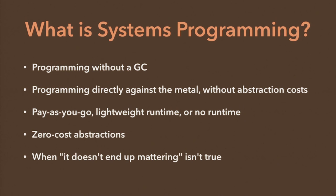A lot of times when you write in a dynamic language, people say that performance thing doesn't really end up mattering in practice. But I think everybody has experienced times where it did matter — where you wrote a bunch of code, and yes, 90% of your app had no performance cost, but then you had some area where performance actually mattered. A systems programming language is a language you can use to deal with those cases. That's why a lot of people writing Ruby end up going and writing C, or people who write Node end up writing C.